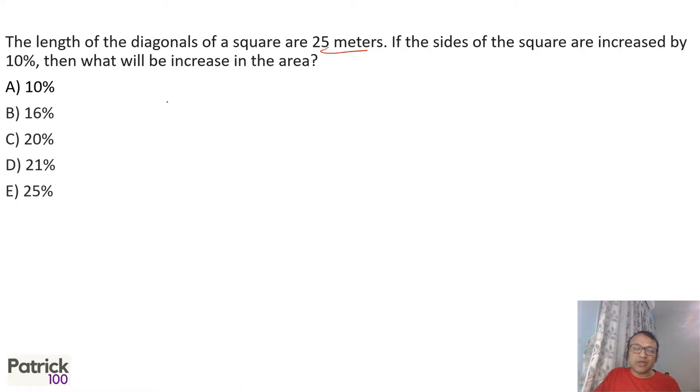When there are two similar figures, the ratio of the sides are A to B. The ratio of the area will be A squared to B squared.